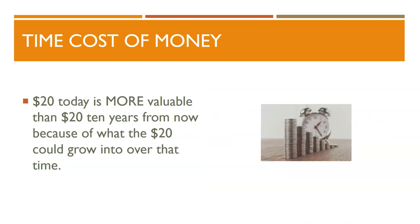The time cost of money is an important concept to understand why you should place earning and saving money now as a higher priority, as opposed to putting it off and doing it later. The time cost of money refers to the fact that if you have $20 today, it is worth more to you than having $20 next month. If you put that $20 today into even a basic savings account, it will earn interest, so in a month you would have that original $20 plus any interest it earned. Whereas if you just wait a month to get $20, all you'll have at that moment is $20.